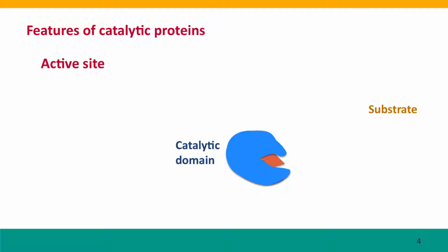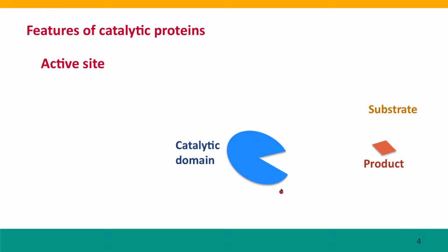Once the product is formed, it's a different molecule than the substrate was, and it doesn't bind securely to the enzyme anymore, so the product comes loose. Now that the enzyme is no longer bound to the product, it reverts back to its original shape. To summarize: the substrate binds to the active site of the enzyme, the shape of the enzyme changes, that causes a chemical reaction that converts the substrate into a product, the product disassociates from the enzyme, and the enzyme reverts back to its original shape.